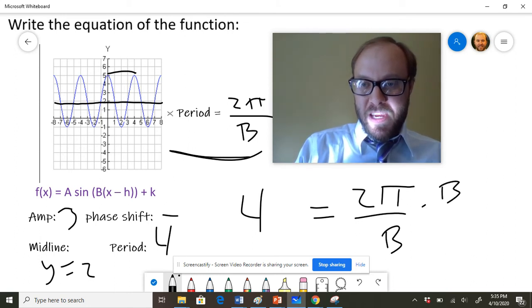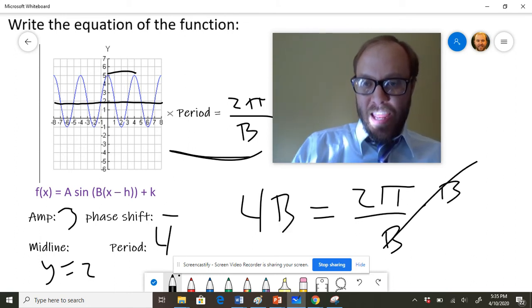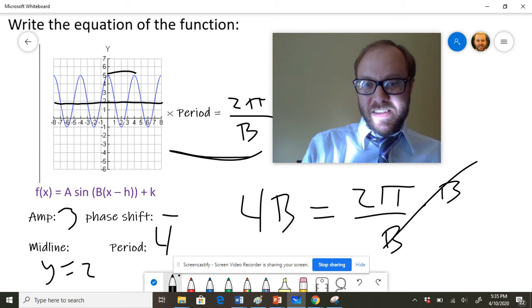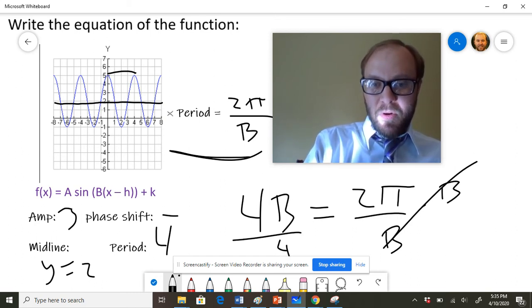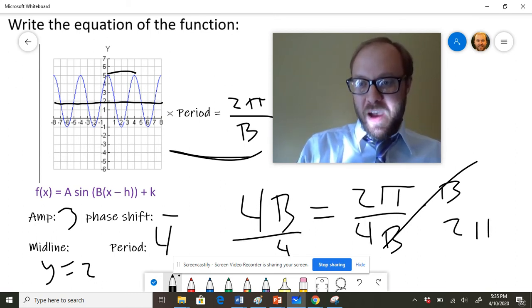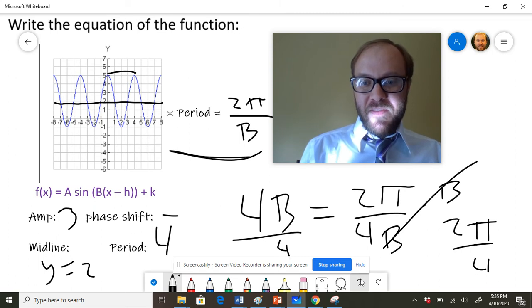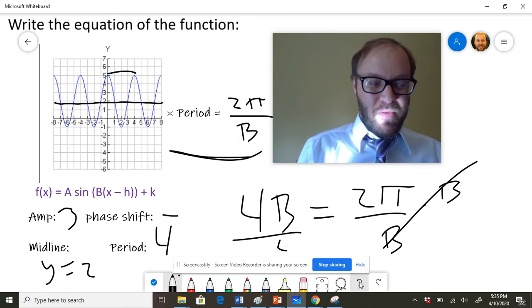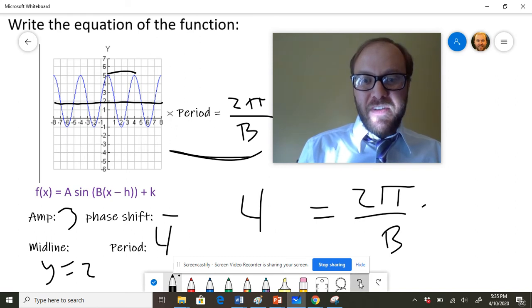So multiply both sides by b here and it'll cancel. You get 4b is equal to 2π. You can divide both sides by four, and you end up with 2π over 4, which is the same thing as π over 2. Okay, so our b value here is going to be π over 2, and that's what we're going to use to put together the final equation.